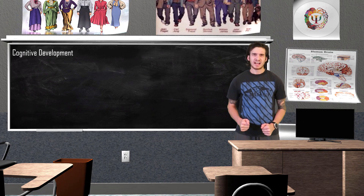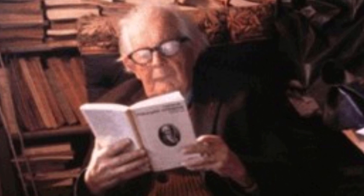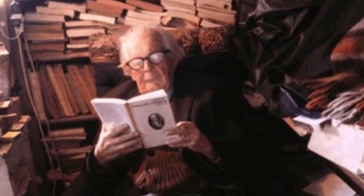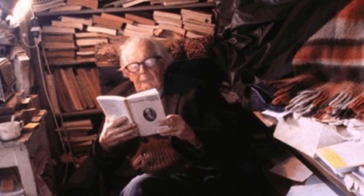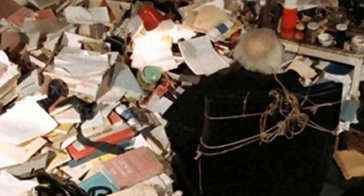Jean Piaget was a cognitive psychologist who in the 1930s would pioneer his theory of cognitive development, which basically explains how we construct mental models of our world. Piaget disagreed with the conclusion that intelligence was a fixed trait and instead believed that cognitive development was a process that occurs through biological developments and interactions with the environment.